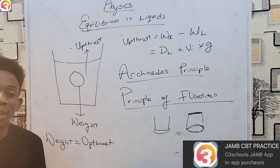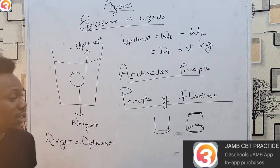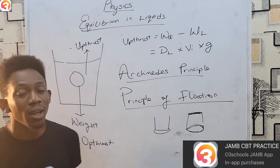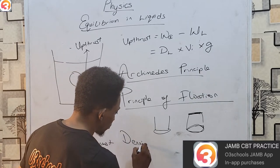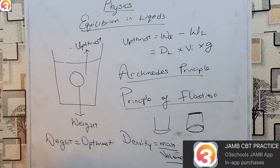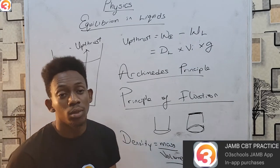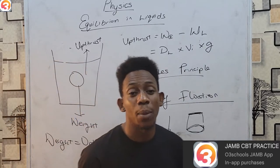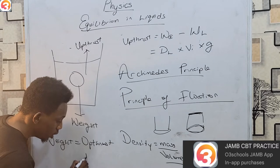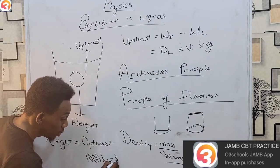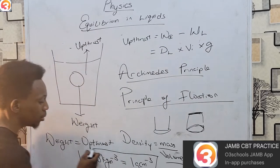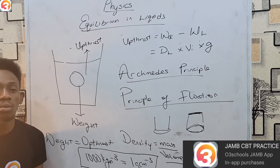Density is mass per unit volume — how much space is occupied by the mass of an object. So density equals mass over volume. The SI unit is kilogram per meter cube. Often, density is given in grams per cm³. Remember: the density of water is 1000 kg/m³, which is also 1 g/cm³. You can use this to convert between kg/m³ and g/cm³.